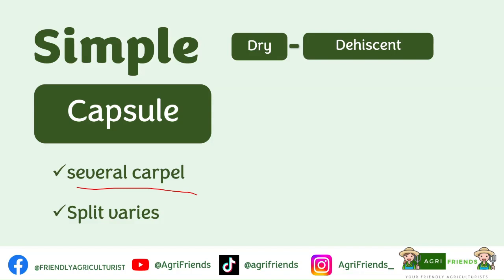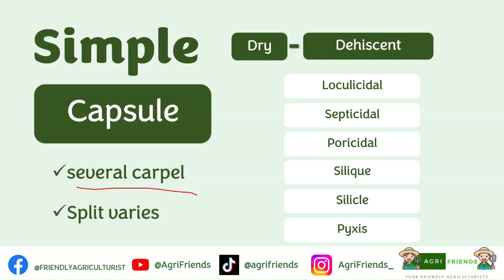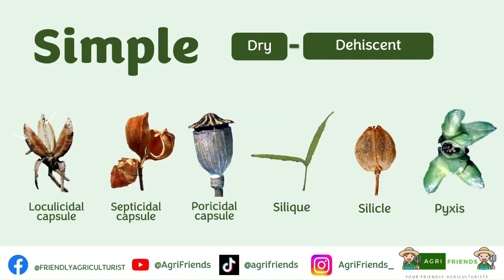The way a capsule splits varies depending on the species, so there are several types of capsules. The loculicidal capsule splits at the midline of the locule at maturity — the split divides the locule into two. An example is the lily. For the septicidal capsule, the split occurs along the septum or wall. Examples are yuccas and agaves.